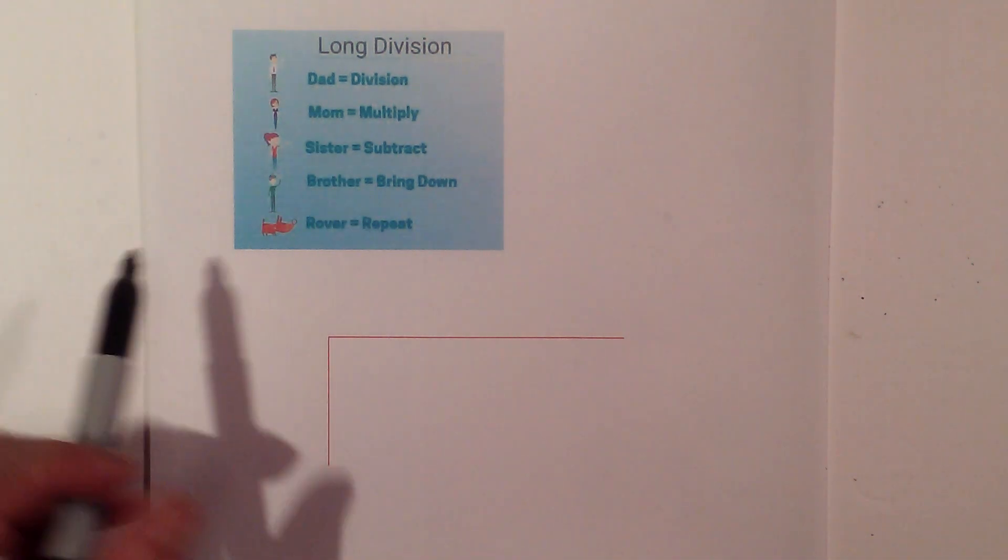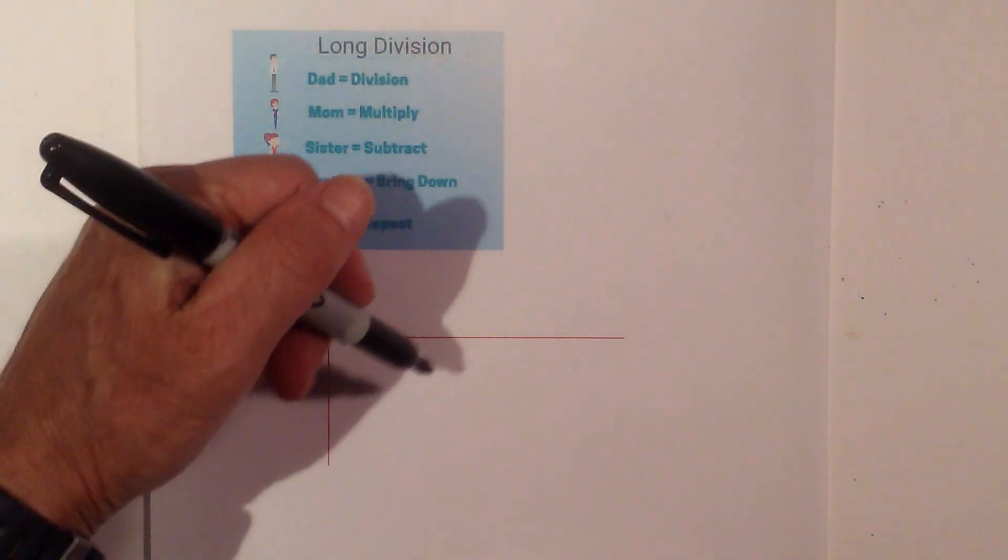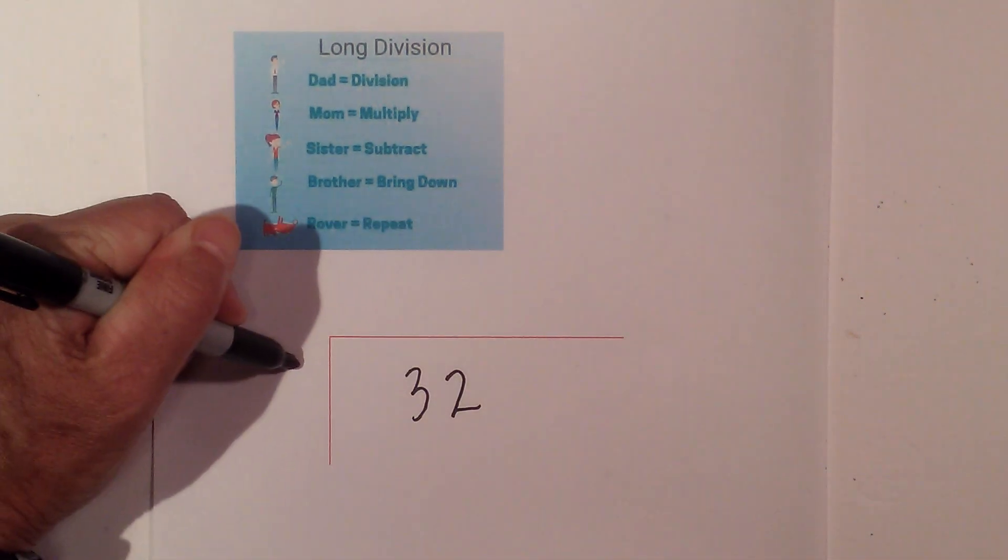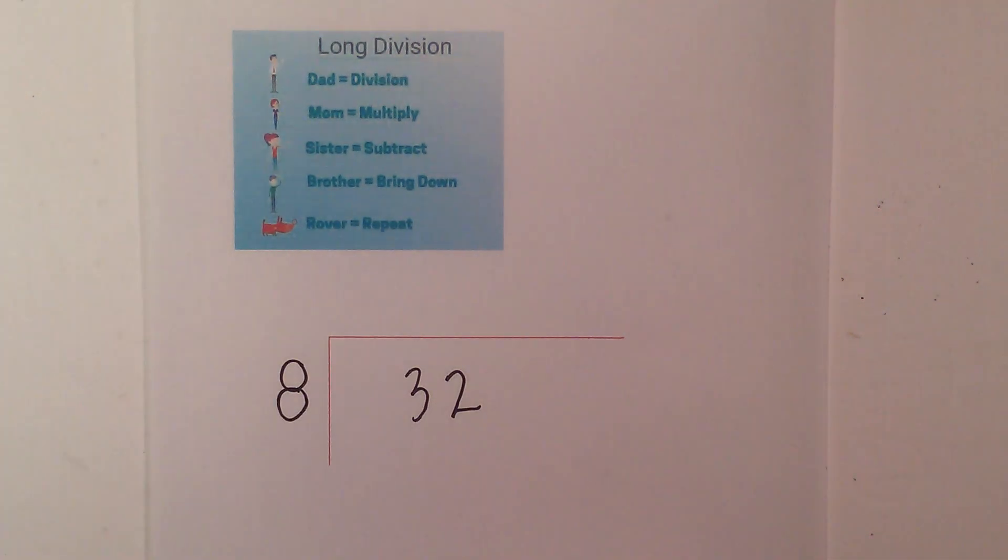Dad, Mom, Sister, Brother, Rover. Okay, so let's get started. We have 32 divided by 8. Just to remind you, the 32 is called the dividend, the 8 is called the divisor, and then your answer will be the quotient.